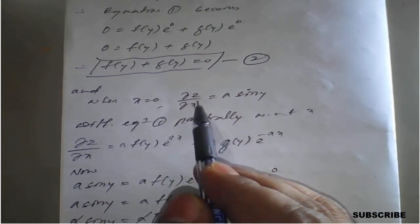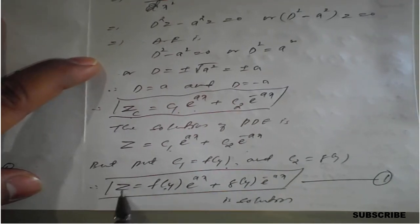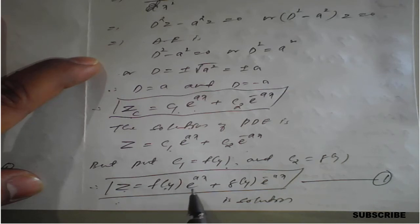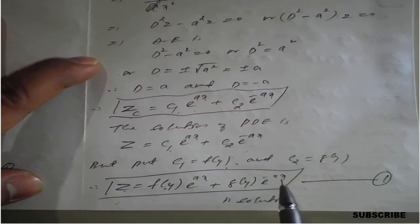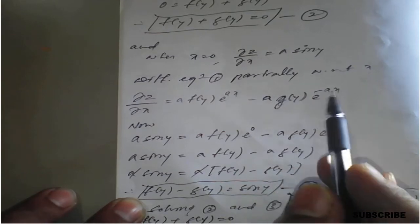Now apply condition two: when x = 0, ∂z/∂x = a·sin(y). Differentiate equation one with respect to x: ∂z/∂x = f(y)·a·e^(ax) − g(y)·a·e^(−ax).